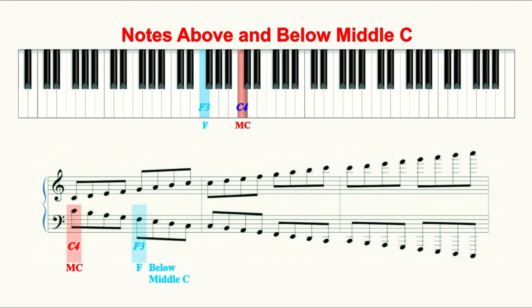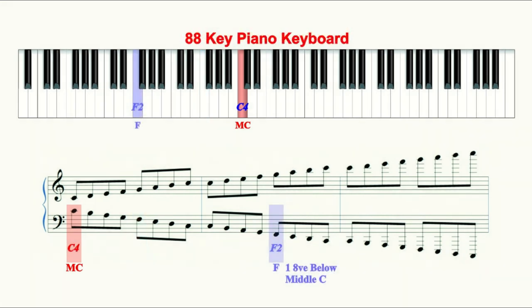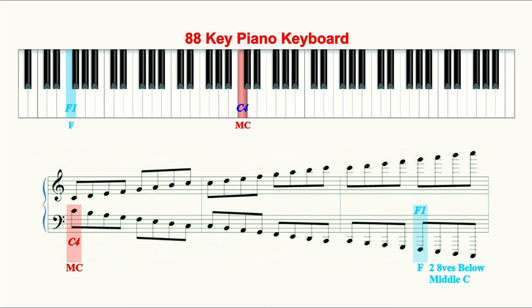These are the tones within the range of the octave just below middle C. In naming the F an octave below middle C, we say F one octave below middle C or F2. These are the tones within the range of one octave below middle C. If we want to describe the F one octave lower still, we tell our musicians to play the F two octaves below middle C or F1. These are the tones within the range of two octaves below middle C.